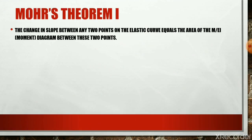Before discussing the moment area method, the basic theorems used are Mohr's Theorem 1 and Mohr's Theorem 2. Mohr's Theorem 1 states that the change in slope between any two points on the elastic curve equals the area of the M/EI diagram between those two points. We draw the bending moment diagram, then divide the bending moment values by the flexural rigidity EI to get the M/EI diagram, which is used in both theorems for computing slope and deflection.